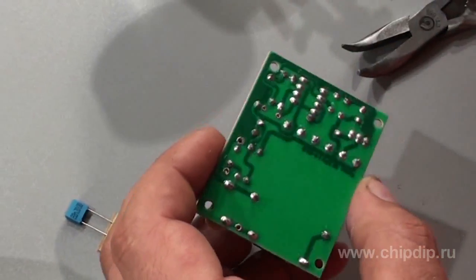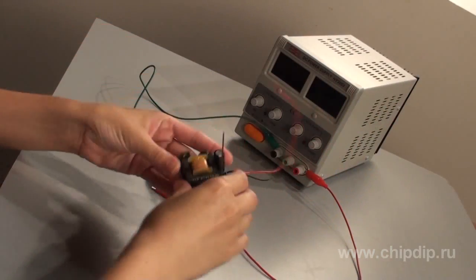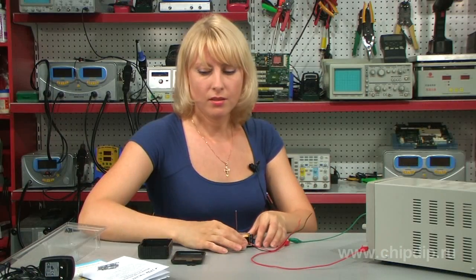The device works using a stabilized power supply. Now we have assembled the NK292 ionizer. Let us check how it works.